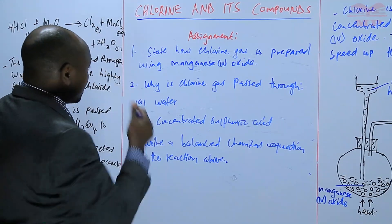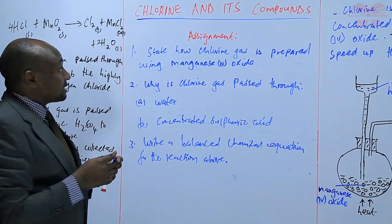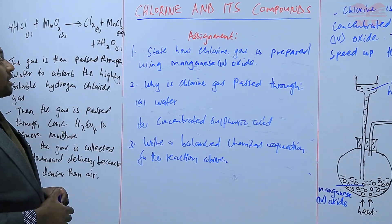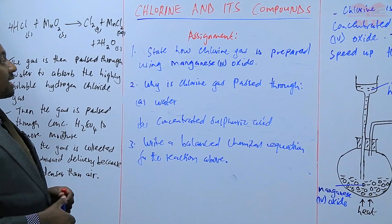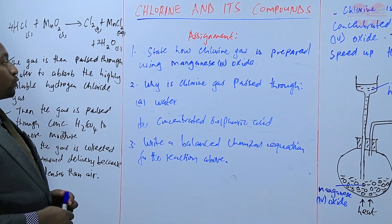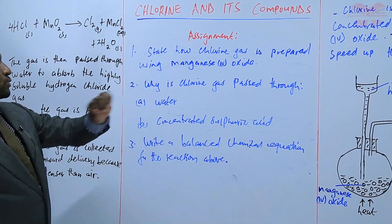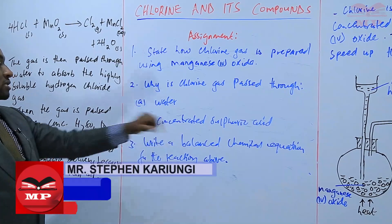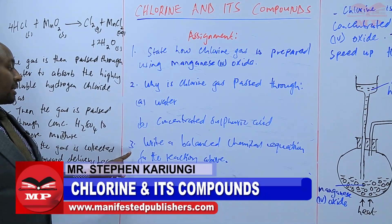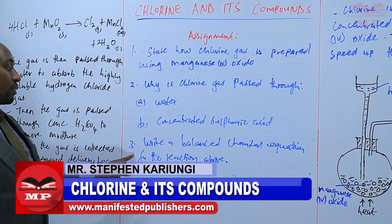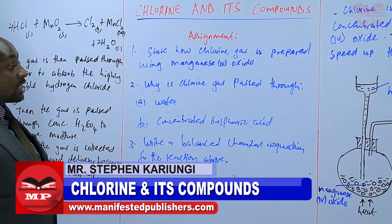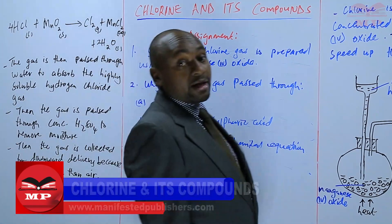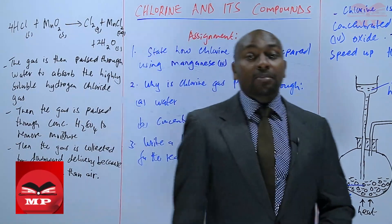For the assignment: question one — state how chlorine gas is prepared using manganese(IV) oxide. Question two — why is chlorine gas passed through (a) water and (b) concentrated sulfuric acid? And lastly, question three — write a balanced chemical equation for the reaction above. We will stop there until next time. Goodbye.